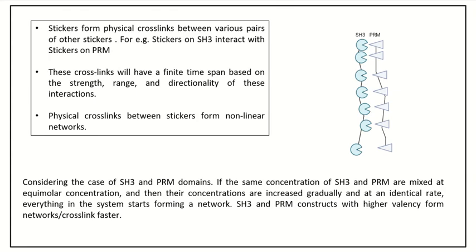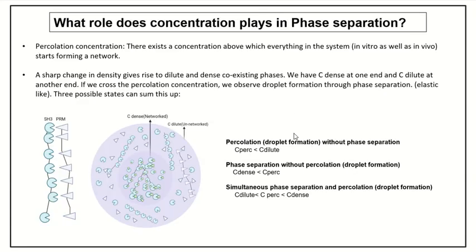If we consider these two factors — valency and concentration — collectively, we will observe phase separation as well as droplet formation. When SH3 and PRM are mixed at equimolar concentration and their concentrations are increased gradually at an identical rate, everything in the system starts forming a network. This concentration at which things in the system start forming a network is known as the percolation concentration, also known as the percolation threshold. This threshold concentration affects both phase separation of proteins and droplet formation.